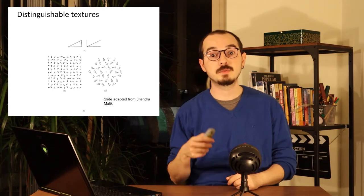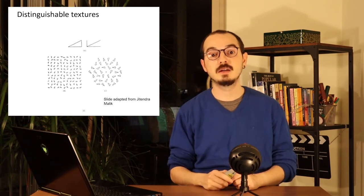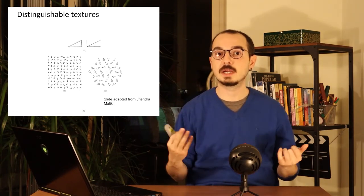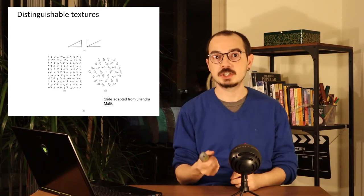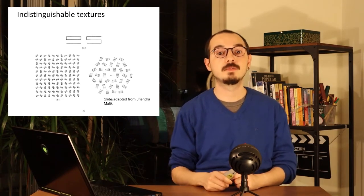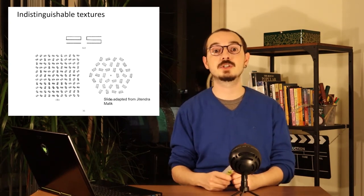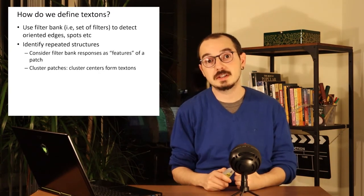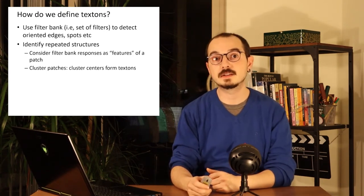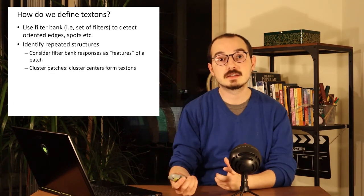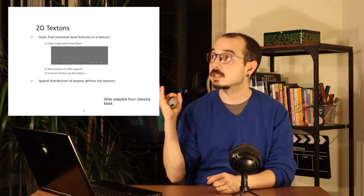We can also differentiate between similar shapes. As you can see in example B, even when drawn very small and densely, we can pick up on which texture is appearing where. But when we have two textures that look too similar, they are no longer distinguishable to humans. Using these as clues, we can define our set of filters to detect oriented edges, spots, and similar features to use as features that we can then cluster.